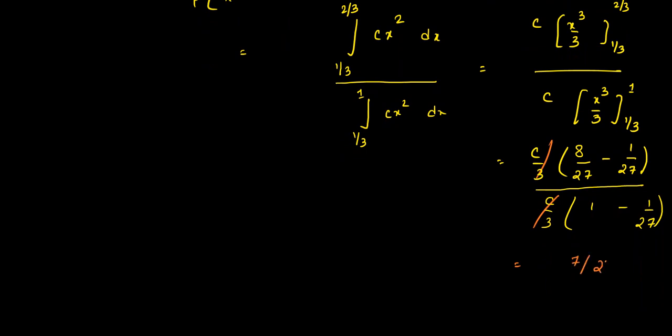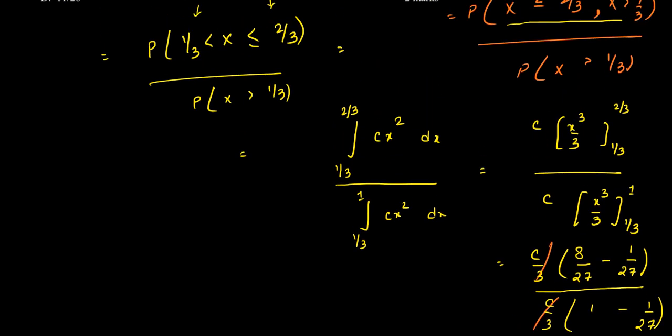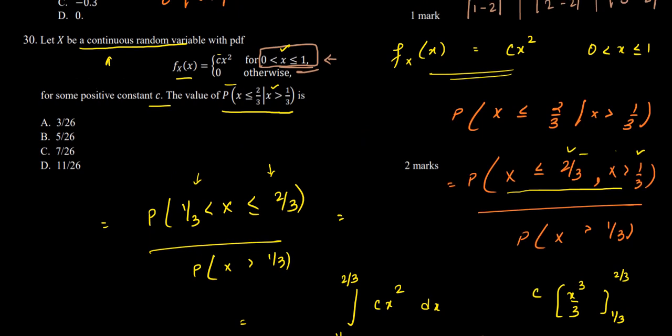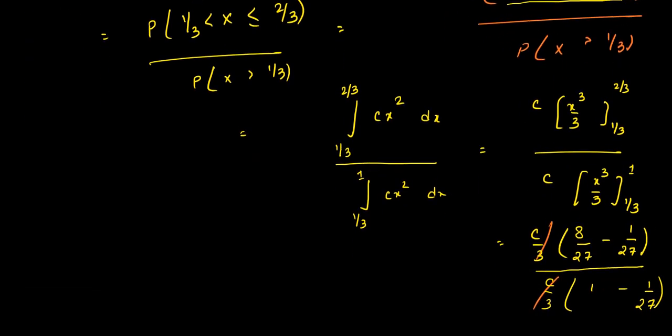After cancellation we are left with 7/27 divided by 26/27, which gives 7/26. So our answer is 7/26. In the options, option C shows 7/26, so option C is the correct answer. This concludes this video; you will find more solutions to the ASET September 2019 question paper in our further videos.